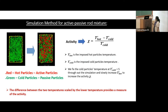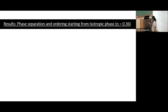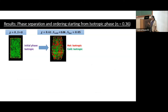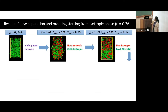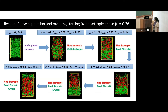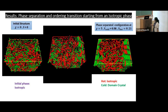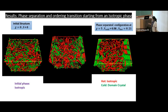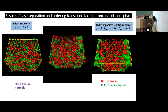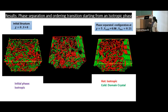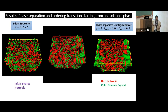Starting from a well-equilibrated isotropic structure, if you slowly increase the activity — that is, increase the temperature of the hot particles — you not only see phase separation but also an ordering transition among the passive particles. As shown in the video, starting from an initial isotropic structure where all particles have the same temperature, increasing the temperature difference leads to phase separation and an ordering transition. We will now quantify these two effects one by one.